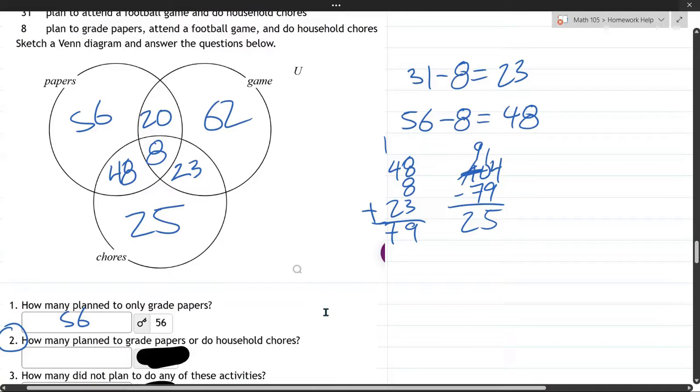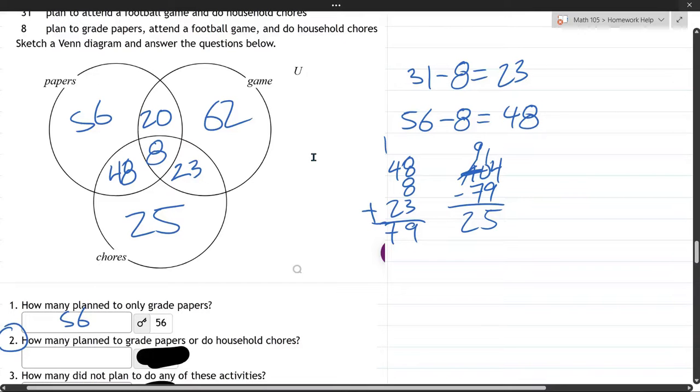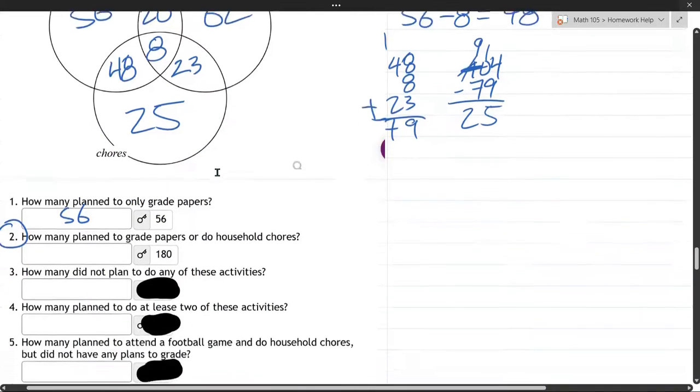How many plan to grade papers or do household chores? So, a couple ways to do it. If anybody in this circle is grading papers, anybody in this circle is doing chores, the only people not grading papers or not doing chores are these 62 people going to the football game. So, you just add up everybody, all these numbers in here, you'll get that total, which I don't feel like doing. But I will uncover the answer. So, 180 should be the sum of all those numbers right there.